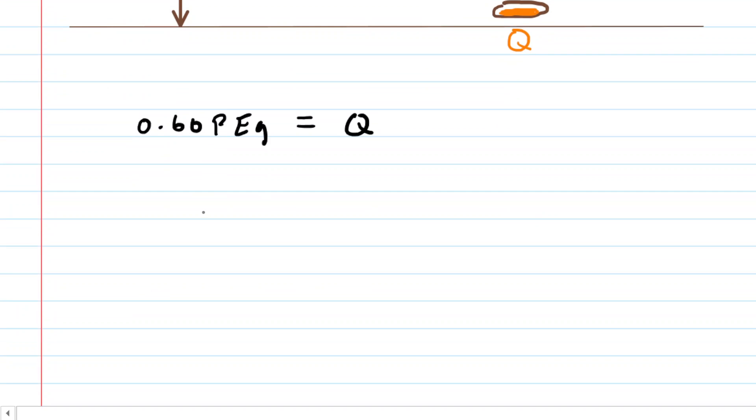We know from an earlier chapter that gravitational potential energy is the mass of the coin times lowercase g, the gravitational constant, multiplied by the height of the coin.